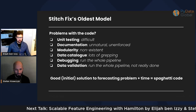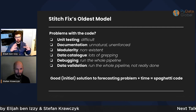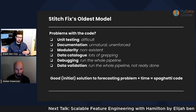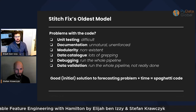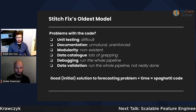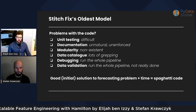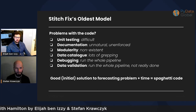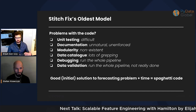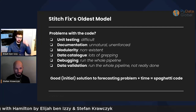The problems: unit testing ended up being very difficult and was almost never done. The whole thing was put together in one big monolithic script and not separated nicely so you could unit test. Documentation was unnatural and unenforced — just a lot of code comments, and you had to grep through the code base. Modularity was effectively non-existent. To treat it as a data catalog, you had to do a lot of grepping. To debug it, you had to run the whole pipeline — no running an individual piece. Data validation also required running the whole pipeline and was not really done. So this was a good initial solution, but over time it turned into spaghetti code.